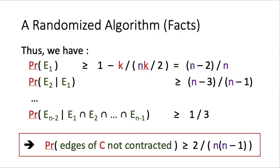The probability of E₁ — not contracting an edge of C in round 1 — is at least 1 − K/(KN/2) = (N−2)/N. Similarly, P(E₂|E₁) ≥ (N−3)/(N−1), and so on. The last term P(E_{N−2}|E₁,…,E_{N−3}) ≥ 1/3. Multiplying all terms together, the probability that no edge of C is contracted is at least 2/(N(N−1)), because many terms in the numerator and denominator cancel telescopically.